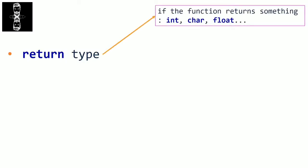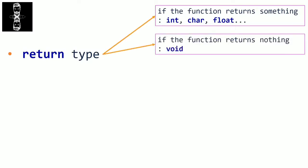But we can decide to not return anything. For example, if you make a function that prints 'hello world', it won't return anything — you aren't waiting for a result from it. So we have to use the keyword void. We will see that in the syntax.